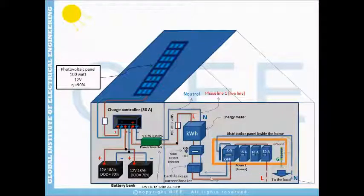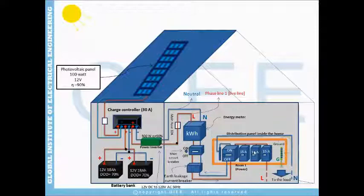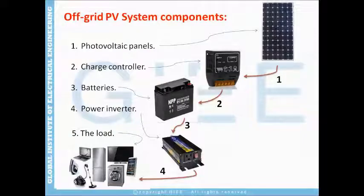This is the distribution panel inside the house. This line is the phase and this is the neutral. We distribute the electricity to the house — this circuit breaker is for the power circuit and this one is for the light circuit in one room of the house, and then this will go to the load.